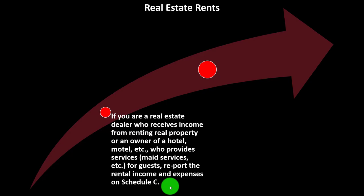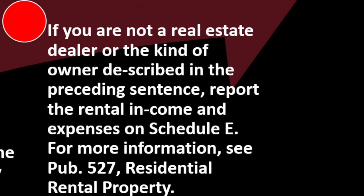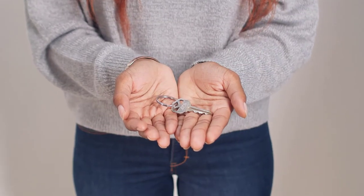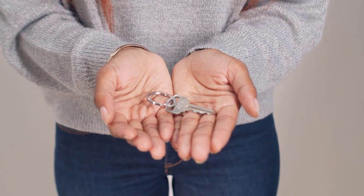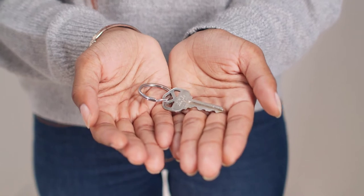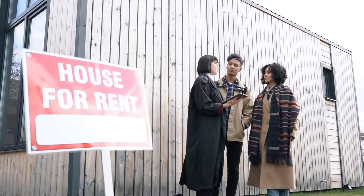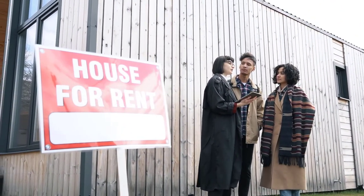So that's the general idea. If you are not a real estate dealer or the kind of owner described in the preceding category, report the rental income and expenses on Schedule E. For more information, see Publication 527, Residential Rental Property. If it was residential rental property — like someone's second home that they're renting out — Schedule E would more likely be used. If you are a real estate dealer receiving income from renting real property, or an owner of a hotel or motel, then Schedule C is more likely appropriate.